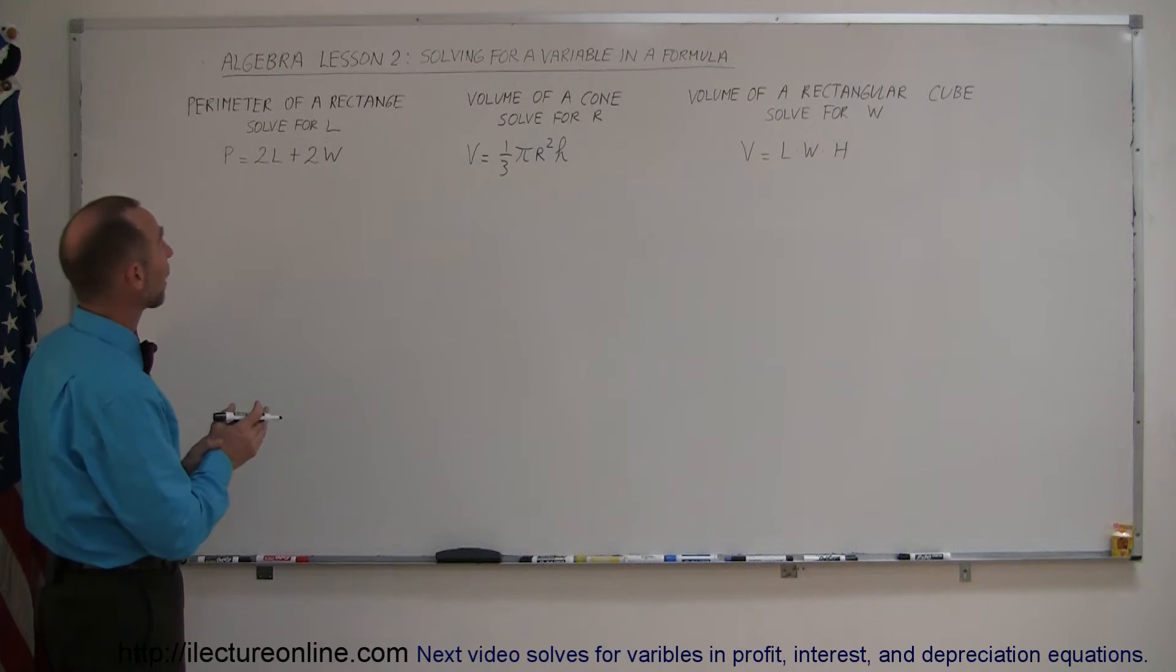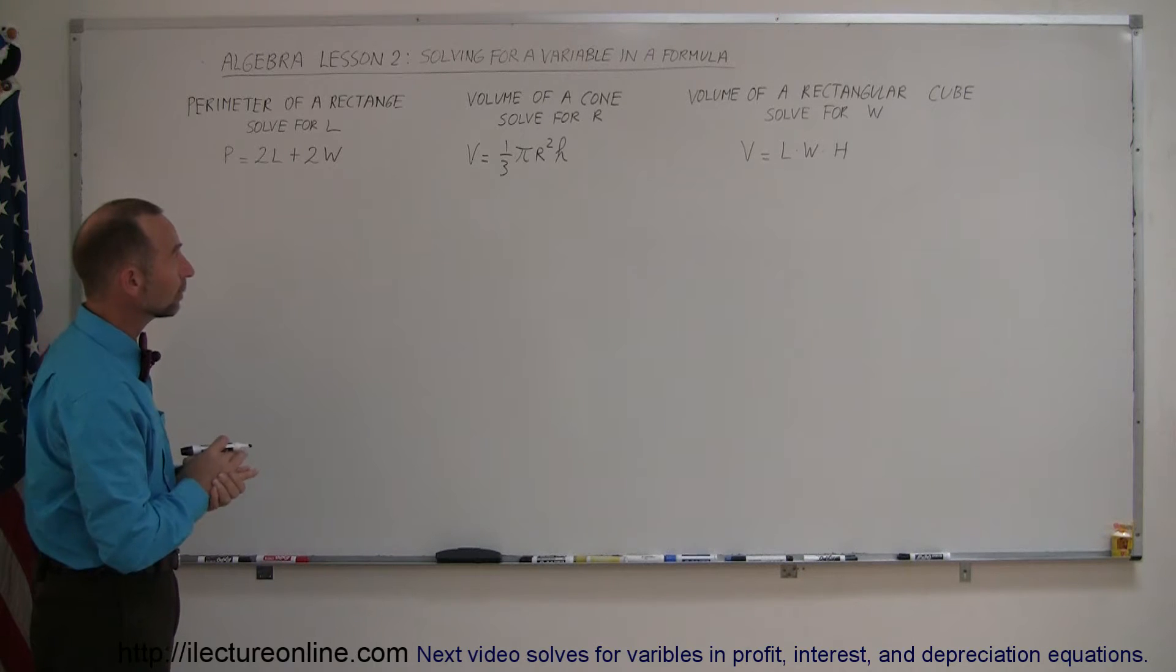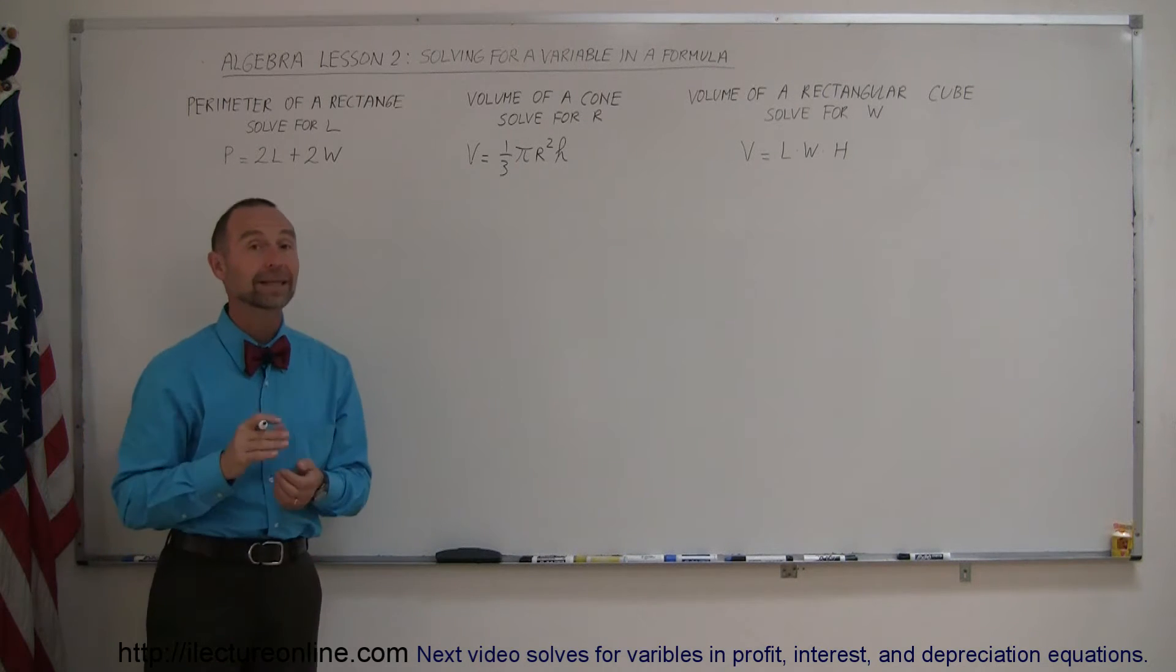All right, three more examples. We have the perimeter of a rectangle, the volume of a cone, and the volume of a rectangular cube.